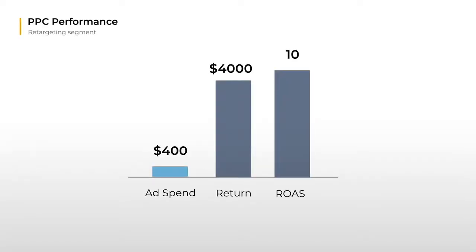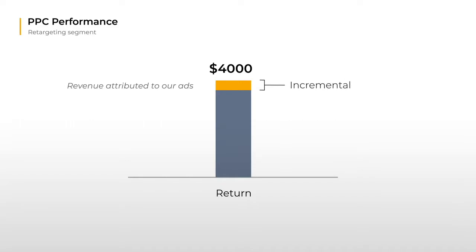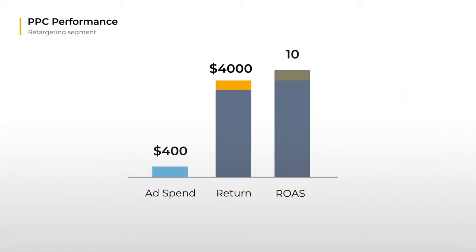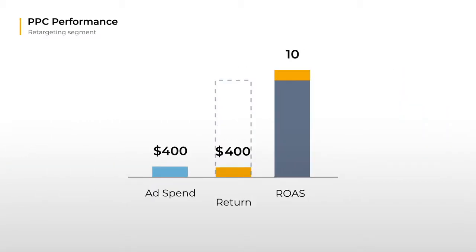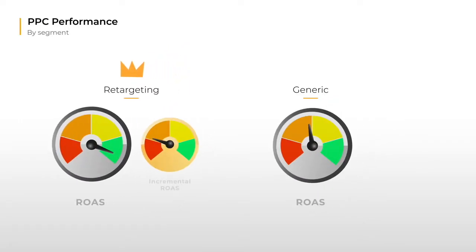An incrementality adjustment divides the revenue into two parts. The incremental return is the part we would lose if we hadn't run the performance advertising campaign. The remaining return is non-incremental — that's the part that really shouldn't be attributed to the campaign. ROAS turns into incremental ROAS by only taking incremental returns into the ROAS calculation. The incremental ROAS reflects the retargeting campaign's value a lot better — it is much lower than initially reported.